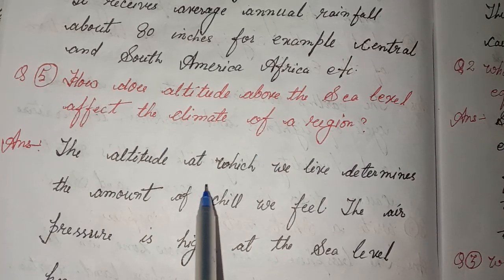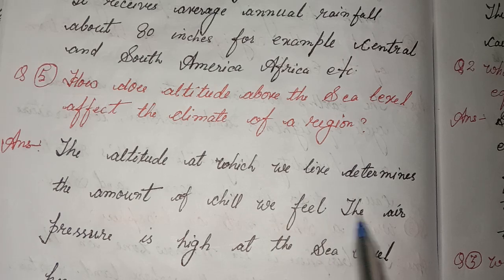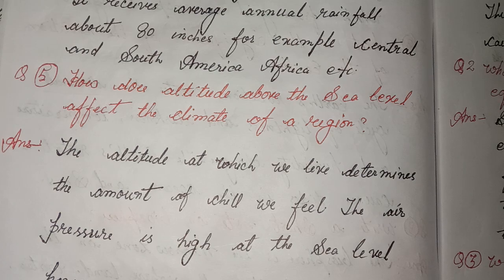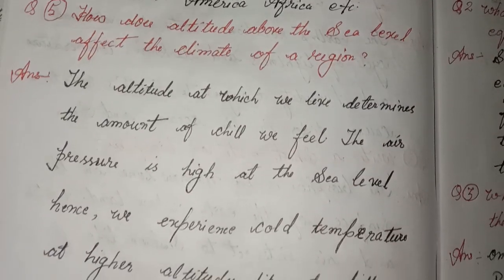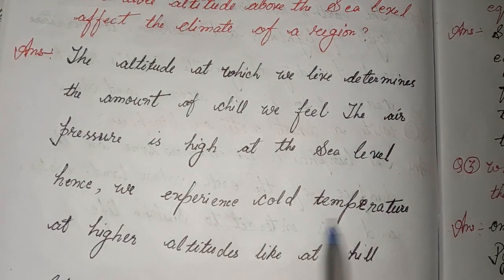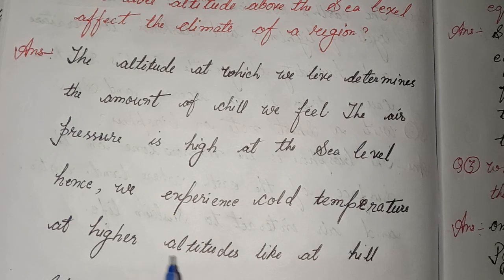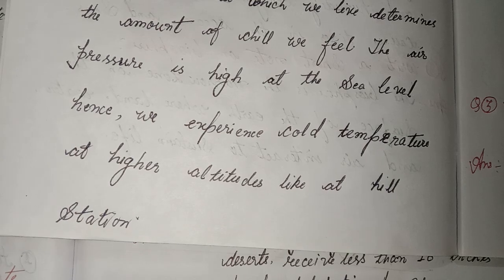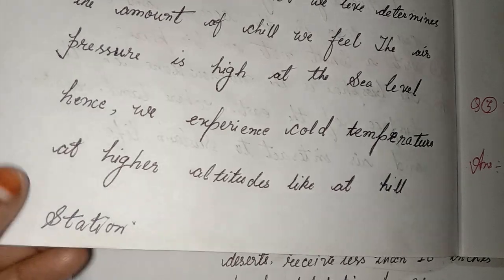Fifth, how does altitude above the sea level affect the climate of a region? Answer: The altitude at which we live determines the amount of chill we feel. The air pressure is high at the sea level, hence we experience cold temperature at higher altitudes like hill stations.